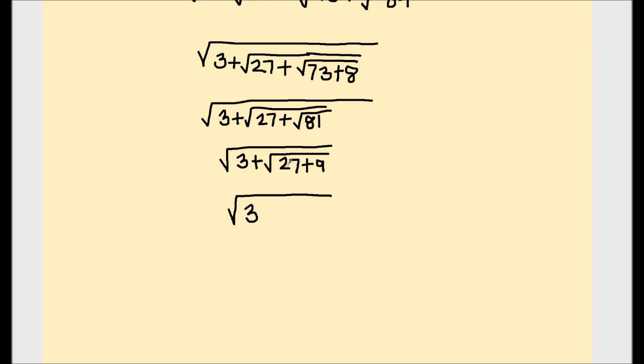Next we will solve 27 plus 9. 27 plus 9 is 36, so this is going to be √(3+√36).